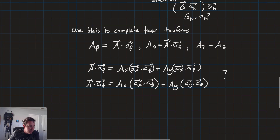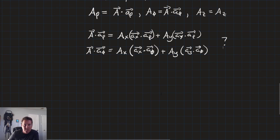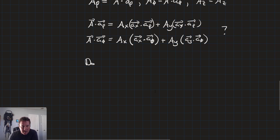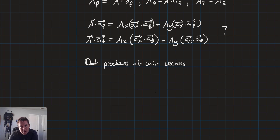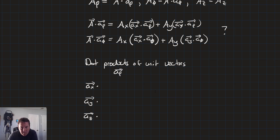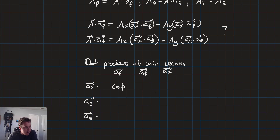To evaluate these dot products, we commit a chart to memory. With â_x, â_y, â_z as rows and â_rho, â_theta, â_z as columns: â_x · â_rho = cos(theta), â_x · â_theta = -sin(theta), â_x · â_z = 0 (orthogonal).